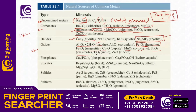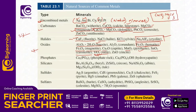Cassiterite is important for tin. Titanium oxide ores are also relevant here. The key oxide ores to remember are: bauxite (Al2O3), hematite (Fe2O3), magnetite (Fe3O4), pyrolusite (MnO2), and cassiterite (SnO2).